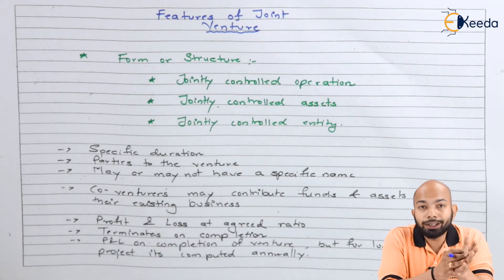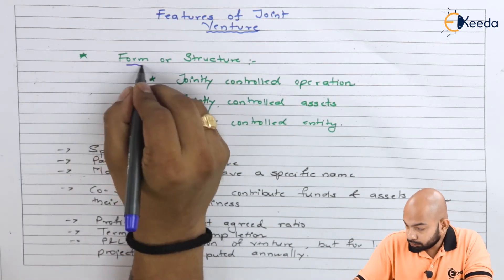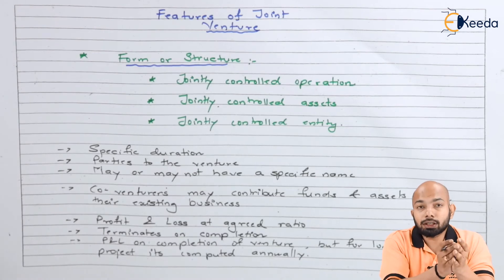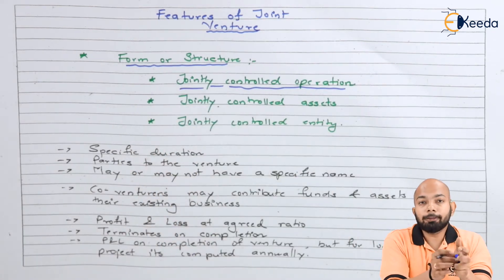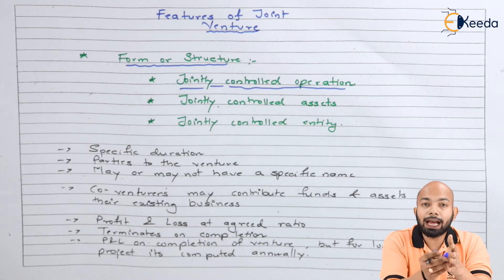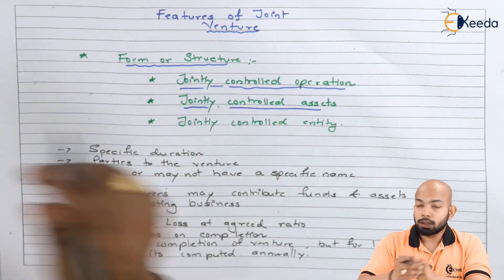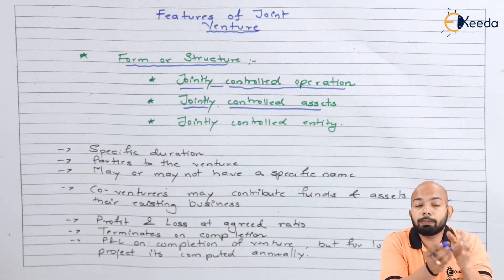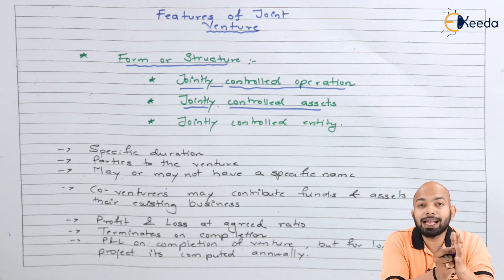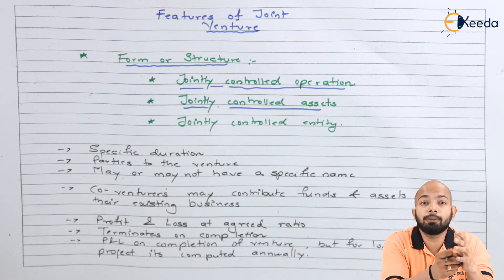We have mentioned certain pointers here which depict the features of joint venture. The first one describes the form or structure of the venture. Under this structure, operations are controlled jointly, because there are two parties — both parties will have the same amount of power in controlling the operations. Similarly, the assets of that specific venture will be controlled by both parties, as both have equal rights and equal opportunities over the assets, operations, and entity.